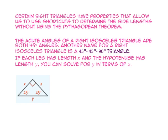Certain right triangles have properties that allow us to use shortcuts to determine the side lengths without using the Pythagorean theorem. The acute angles of a right isosceles triangle are both 45-degree angles. Another name for a right isosceles triangle is a 45-45-90 triangle.